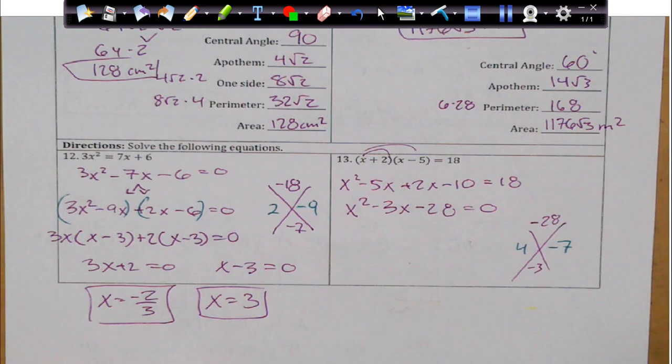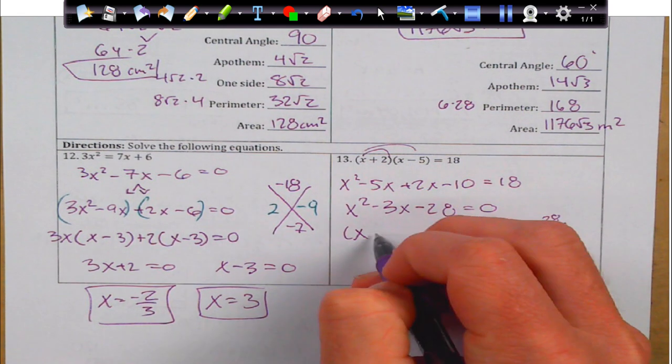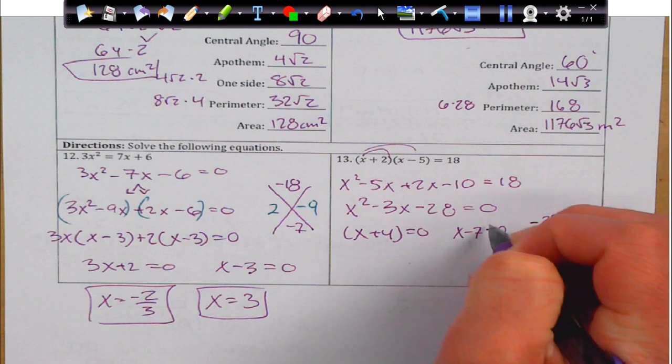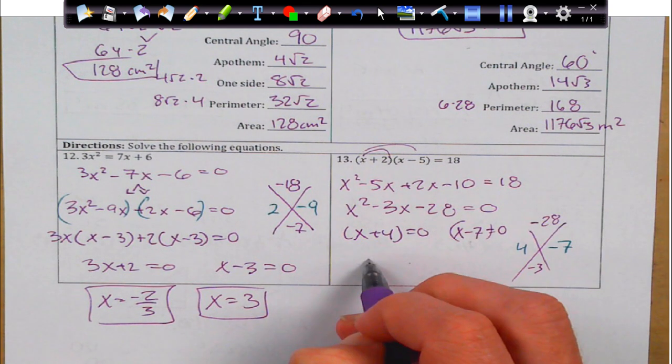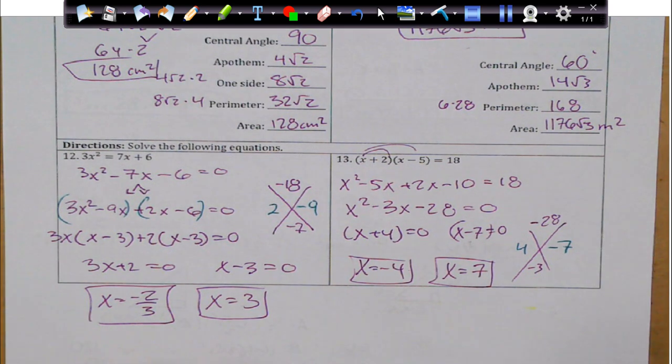4 and negative 7. My inner self is clutch yet again. x plus 4 is going to equal 0. And x minus 7 is going to equal 0. So, we just subtract. We get x equals negative 4. And x equals positive 7. Ladies and gentlemen, people, thank you so much. I hope you enjoyed the video. Have a good day.